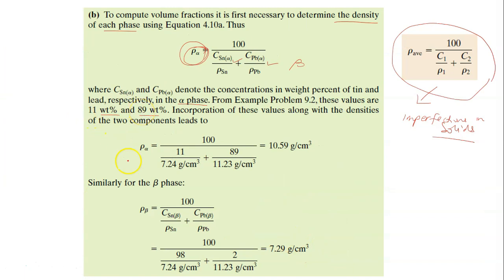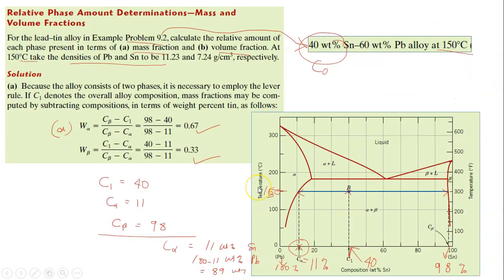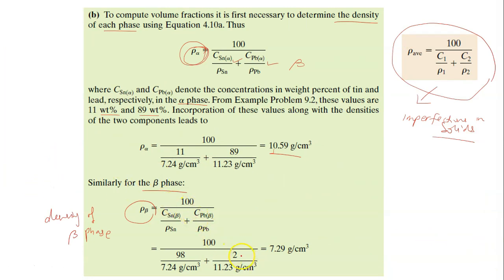Substituting 11 and 89 into the formula gives ρα = 10.59 g/cm³. Similarly, solving for the beta phase: at the beta boundary, tin is 98% so lead is 100 − 98 = 2 wt%. Substituting these values into the same formula gives ρβ = 7.29 g/cm³.